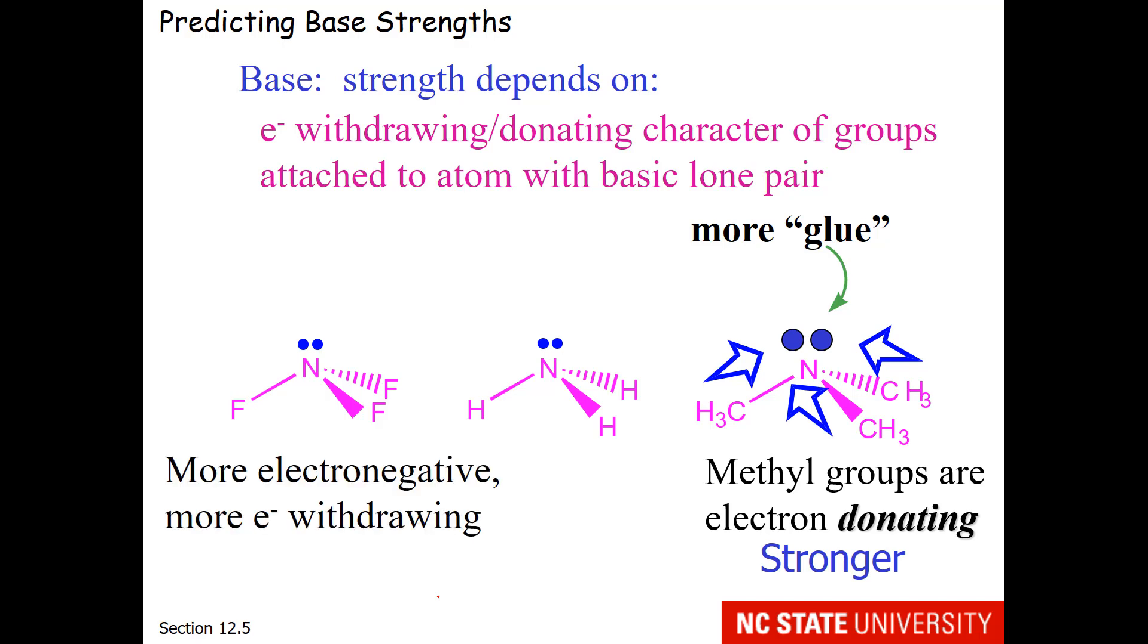Fluorine is electronegative and more electron withdrawing than hydrogen. So we can sort of think about fluorine as weakening the electron density on the nitrogen. Therefore, we have less glue and less ability to reach out and grab a proton. So this would be a weaker base.